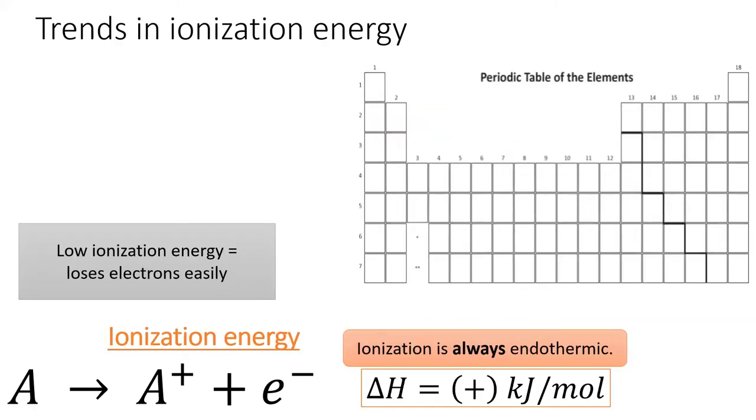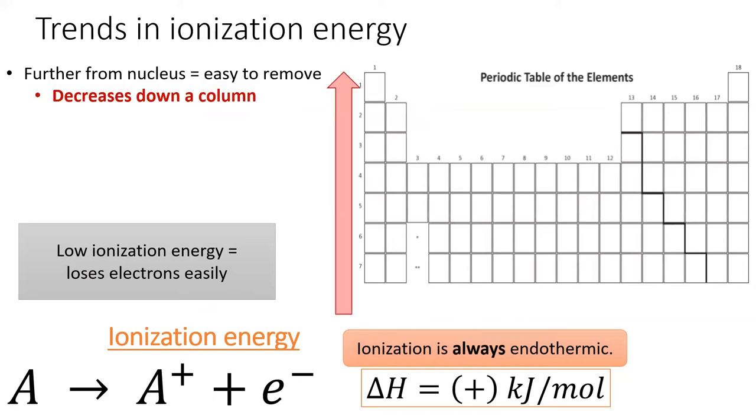As with atomic size, there are periodic trends for ionization energy. As we go down a column, the outermost electrons are further away from the nucleus, making them easier to remove. Thus, ionization energy decreases down a column.